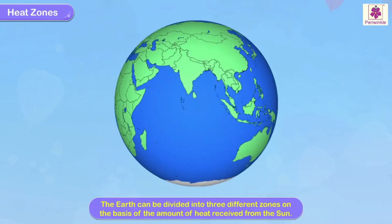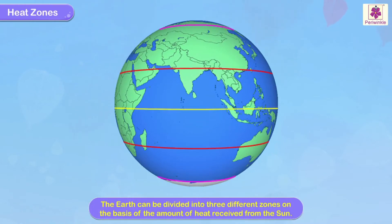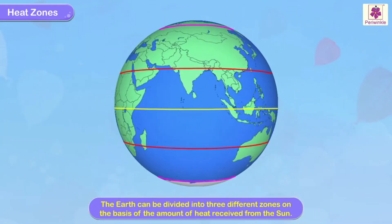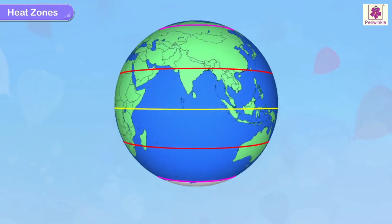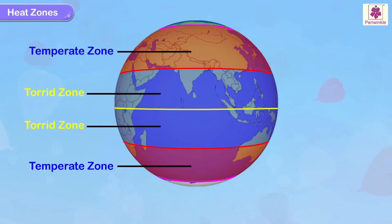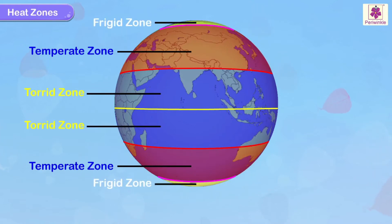The earth can be divided into three different zones on the basis of the amount of heat received from the sun. The three different heat zones are: the torrid zone, the temperate zone, and the frigid zone.